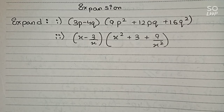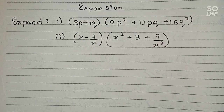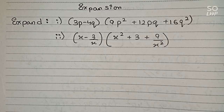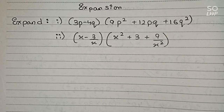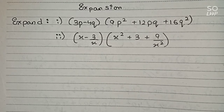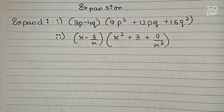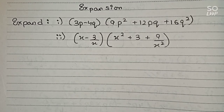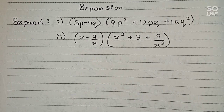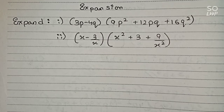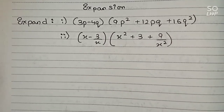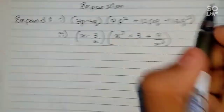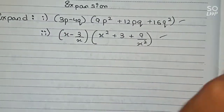Hello guys, welcome to this video. In this video we're going to solve expansion problems. Our questions are: expand (3p minus 4q) multiplied by (9p squared plus 12pq plus 16q squared), and (x minus 3 by x) multiplied by (x squared plus 3 plus 9 by x squared). So these are the questions we will solve.